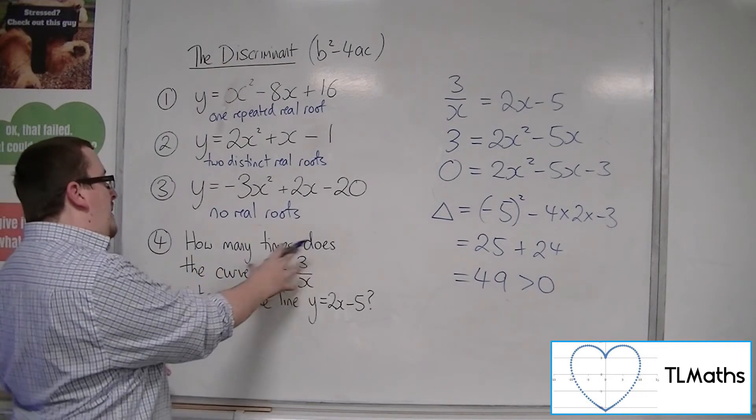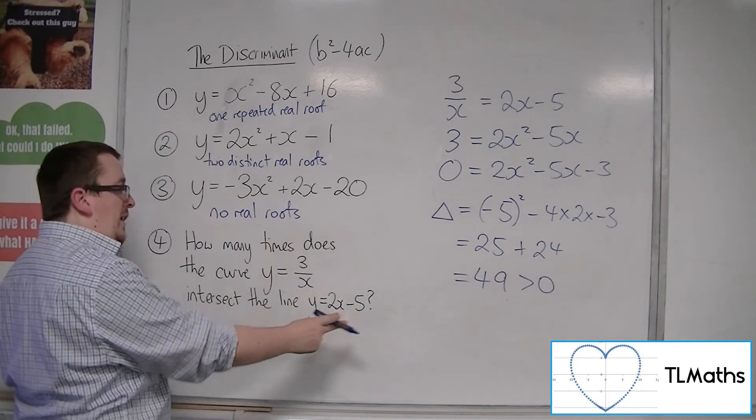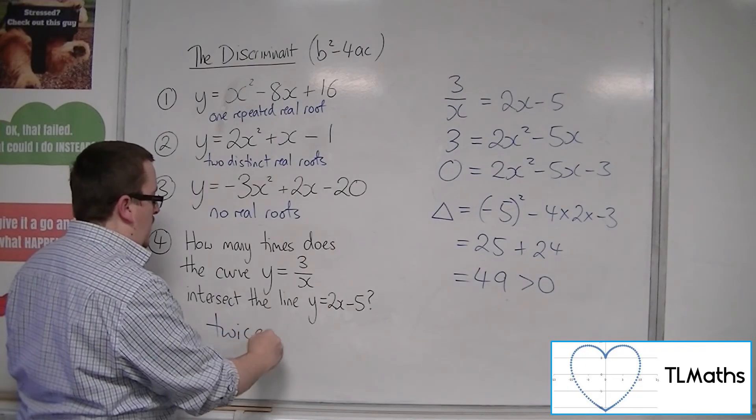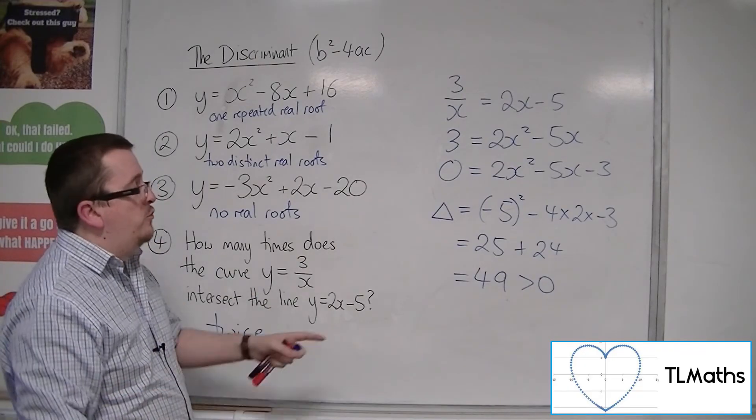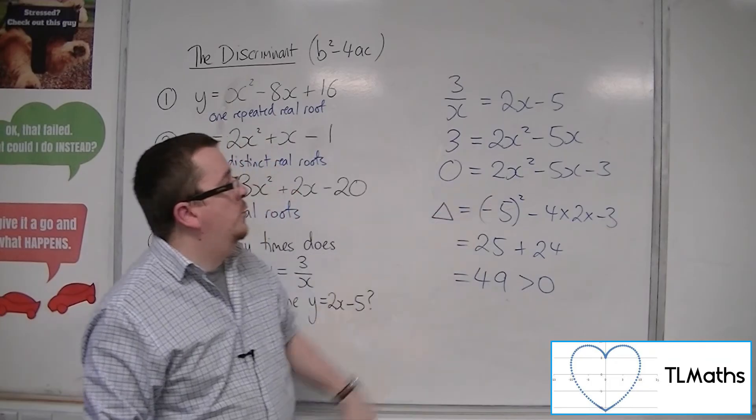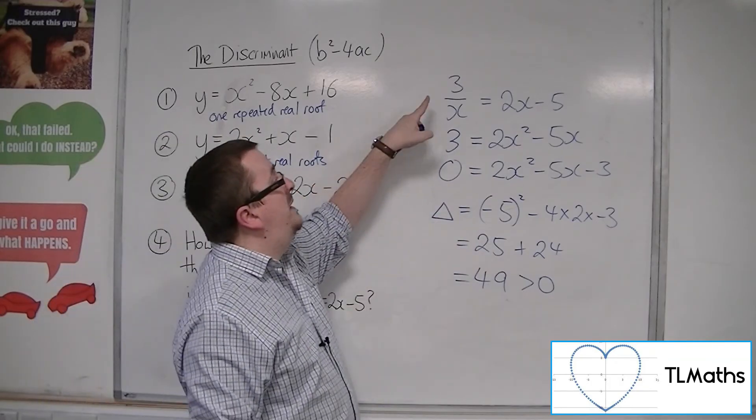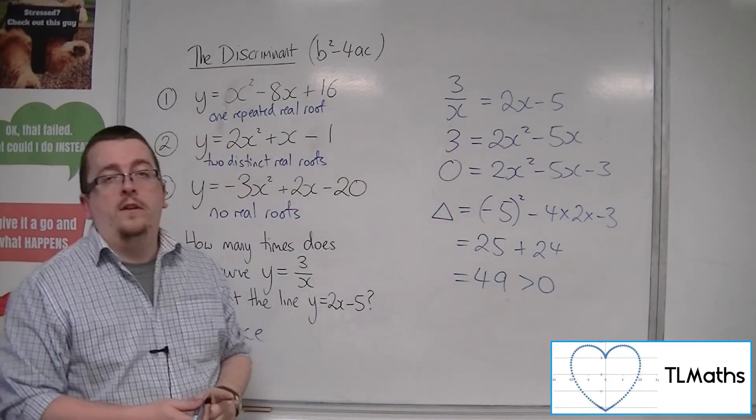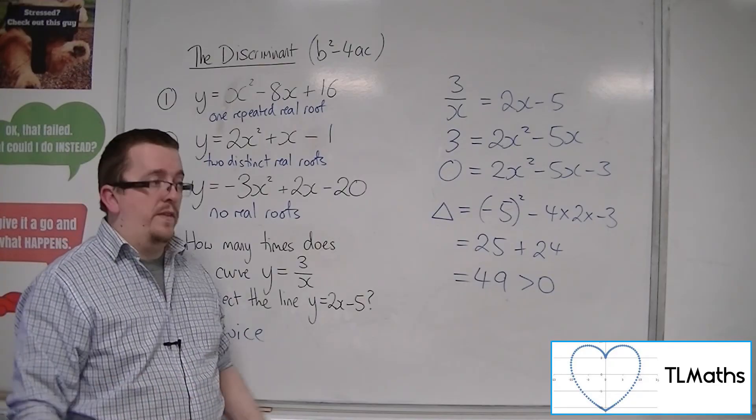And so how many times does this curve intersect the line? Well, it would be twice. There are two distinct real roots to this quadratic equation. And so there must be two points where those equations, where those graphs, intersect.